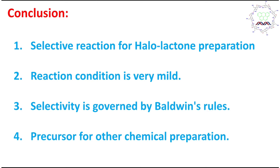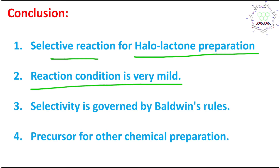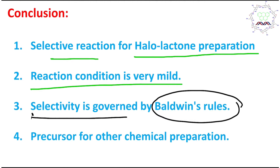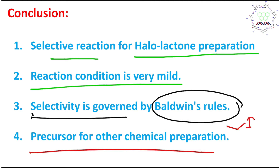To summarize what we have learned today: iodolactonization is a selective reaction for halolactone preparation under very mild reaction conditions. The selectivity of the product is governed by Baldwin's rule, giving exclusively five-membered lactone rings. Furthermore, the iodolactone is a useful precursor for other chemical transformations, since the C–I bond is present and iodine is a good leaving group. Through SN2-type substitution or reductive elimination with zinc/acetic acid, many further reactions are possible.